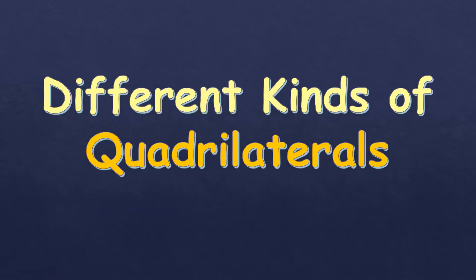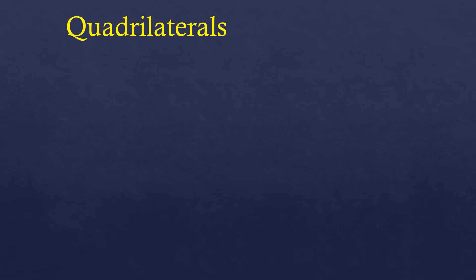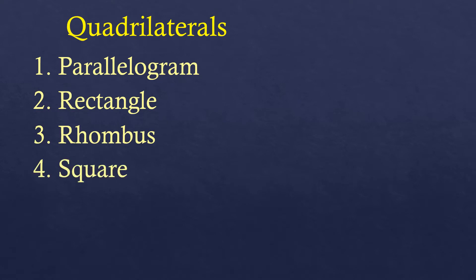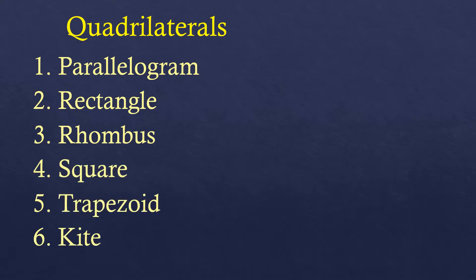In this video, I'm going to talk about two different kinds of quadrilaterals. Quadrilaterals have different types: we have parallelogram, rectangle, rhombus, square, trapezoid, and kite.